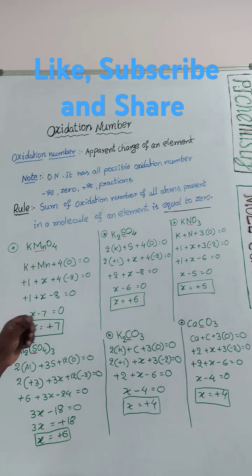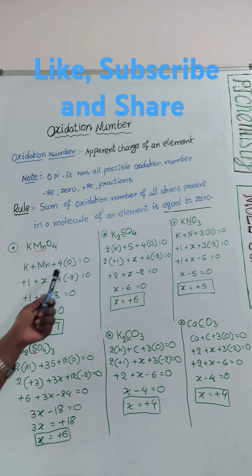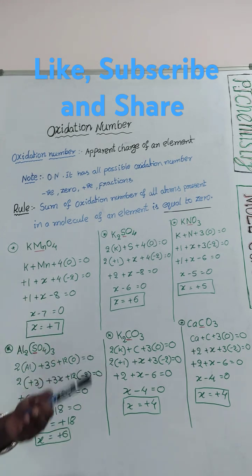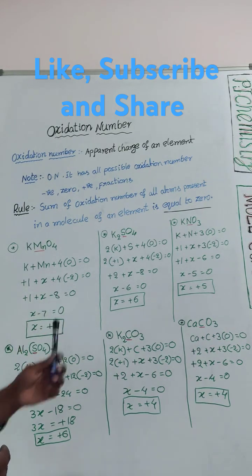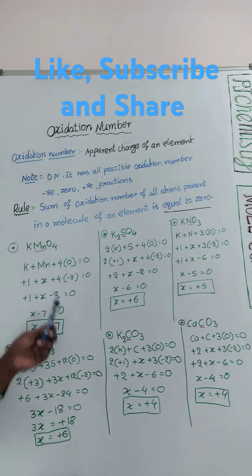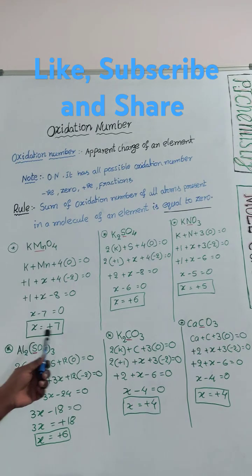Manganese we need to find out, call it x. 4 times oxygen. Oxygen gains 2 electrons to get stability, so -2. 4 times -2. So +1 + x - 8 = 0. If you simplify, x value is +7.